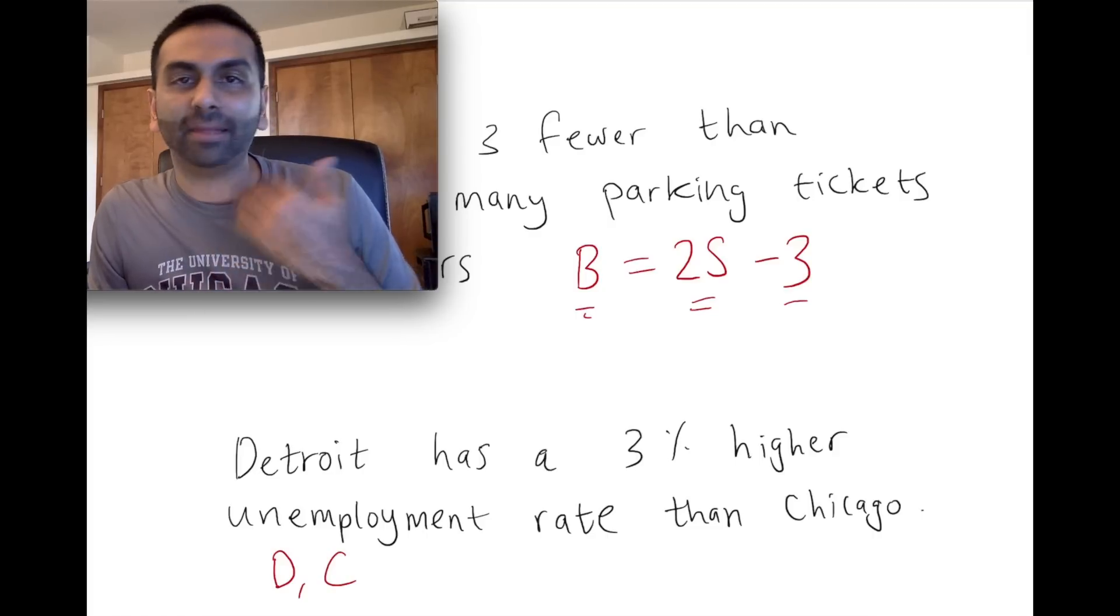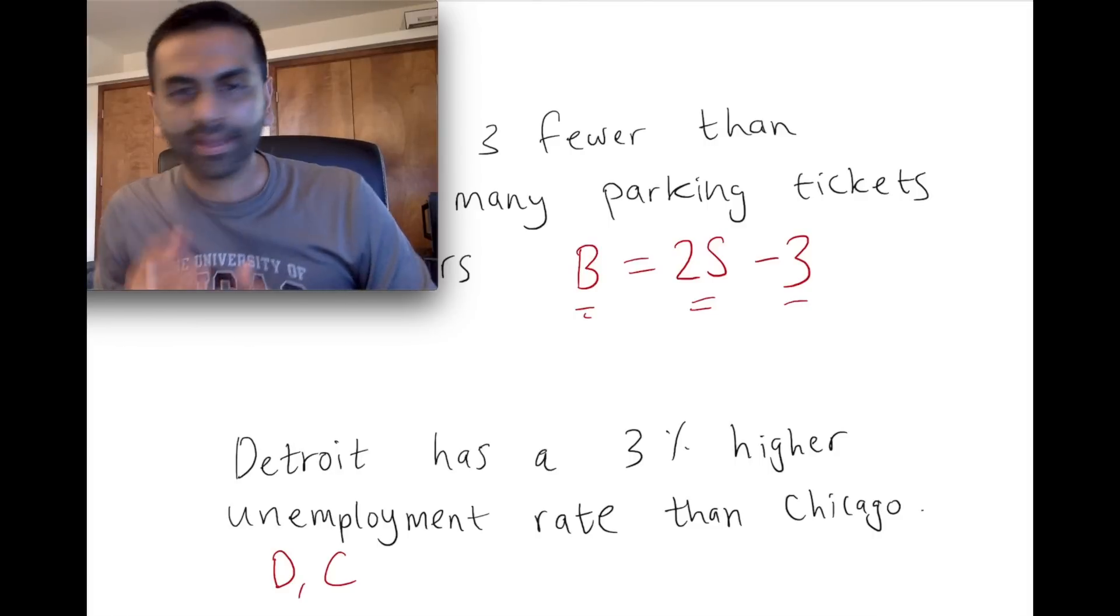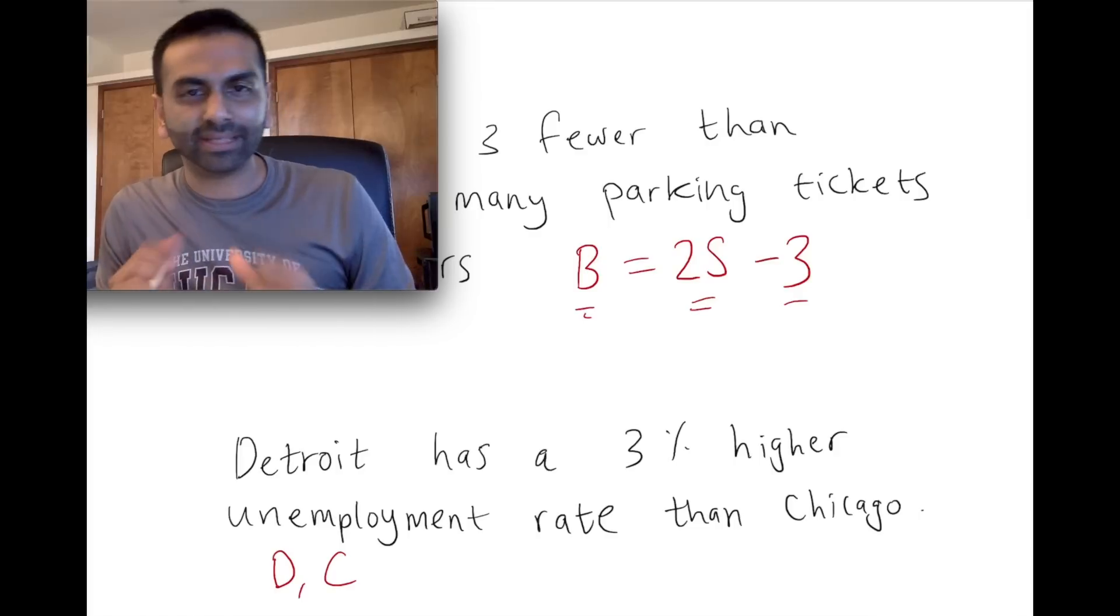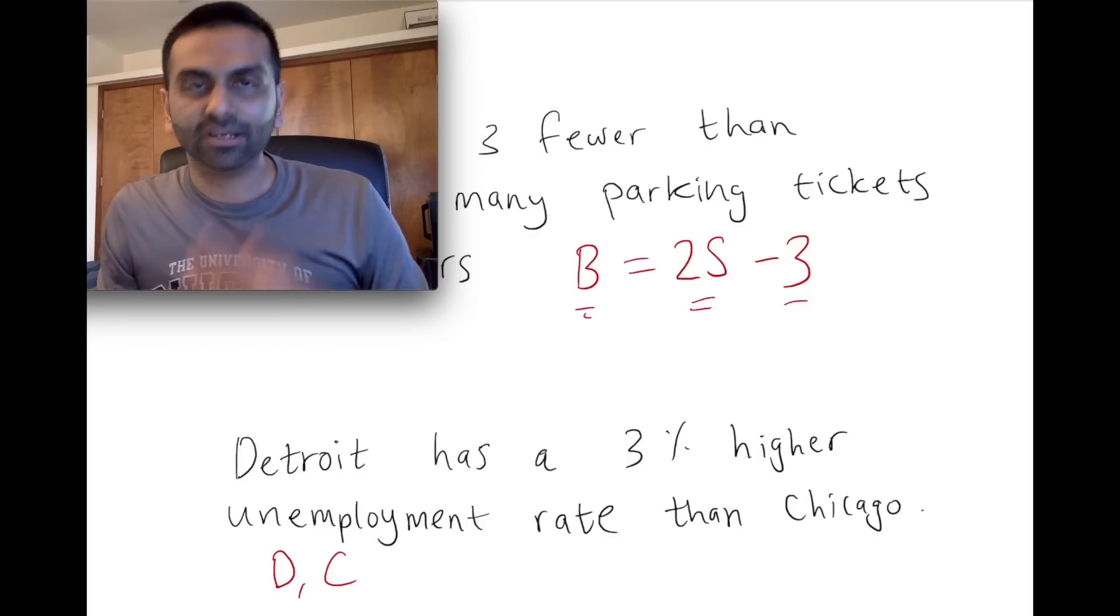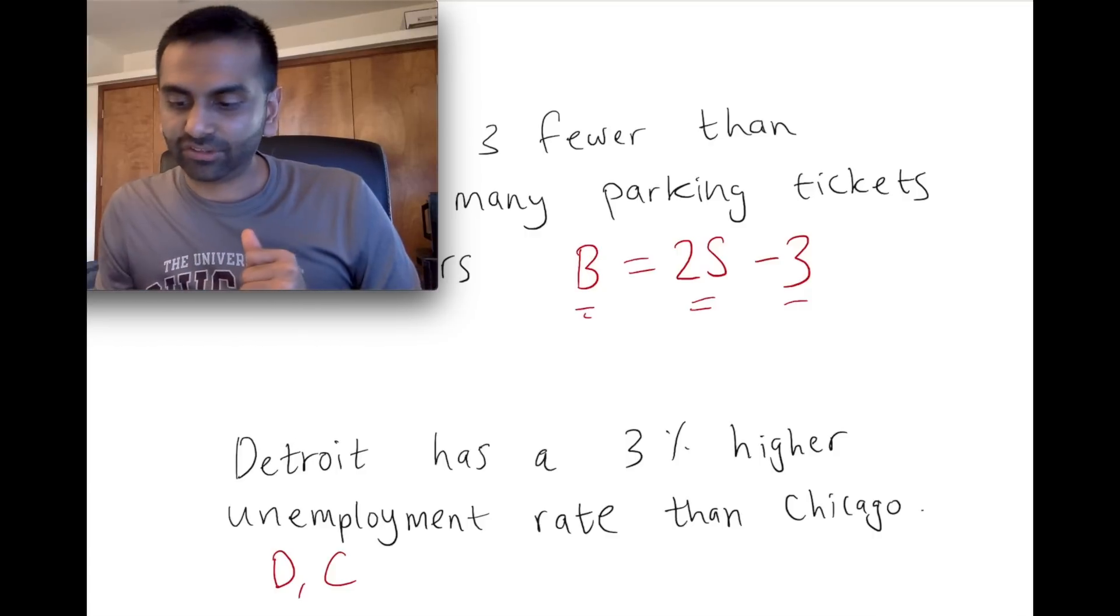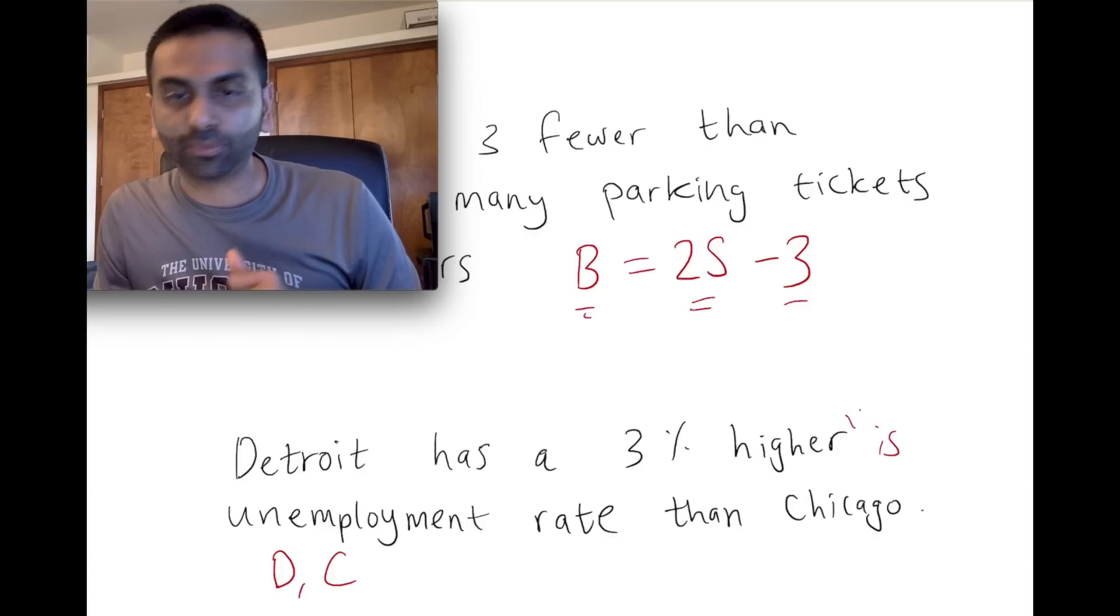to label a variable c, and that's the unemployment rate of Chicago. We want to represent them, relate them. Detroit is three percent higher than Chicago. By the way, the word 'is' translates to equals. So anytime you see the word 'is,' that roughly translates to the equal